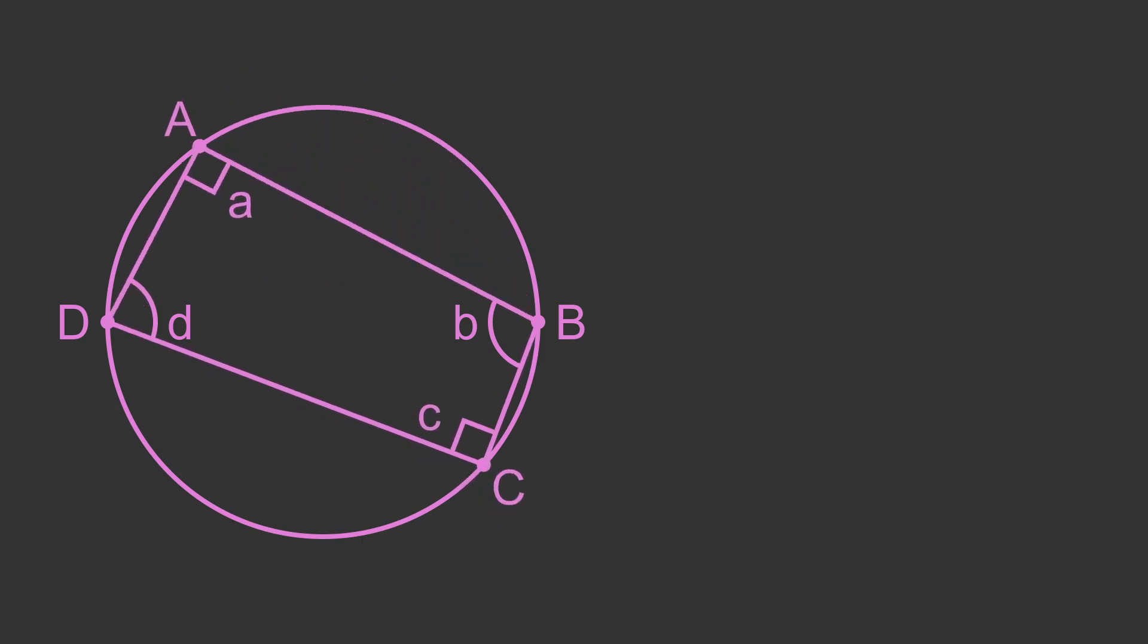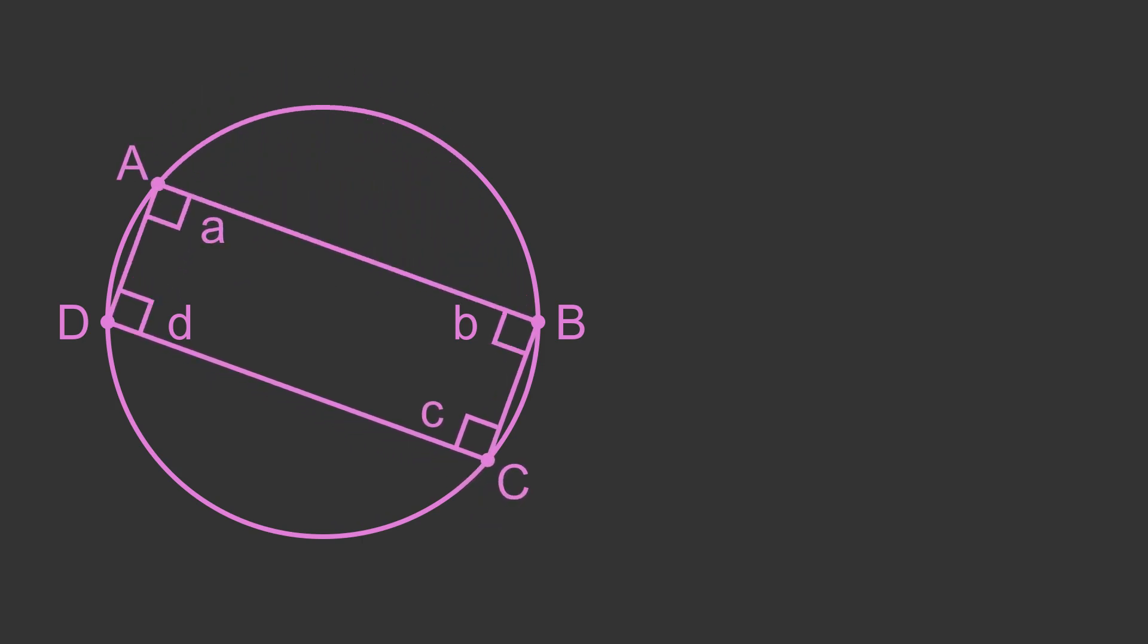In the case where AC is also a diameter, this means the angles B and D are also right angles. So the quadrilateral formed will have four right angles, which of course means it is a rectangle.